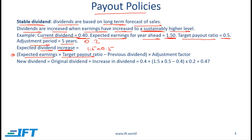So 1.5 times 0.5, which is 0.75, is the expected dividend for the upcoming year. From that we subtract the previous dividend, which in our example is 0.4. This number is then multiplied by the adjustment factor, which is 0.2. This gives us 0.07, which is the expected dividend increase.